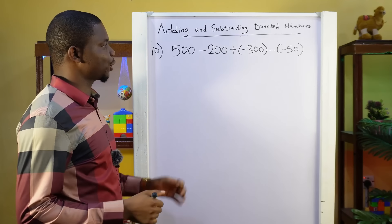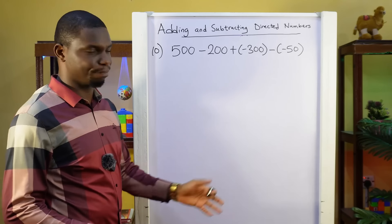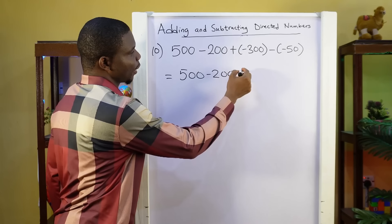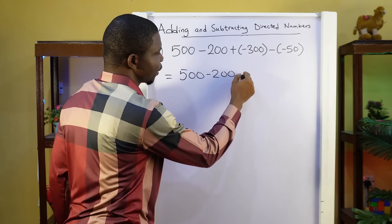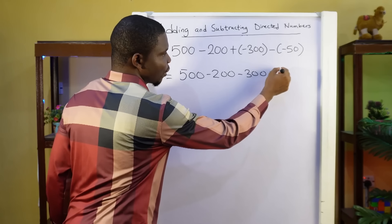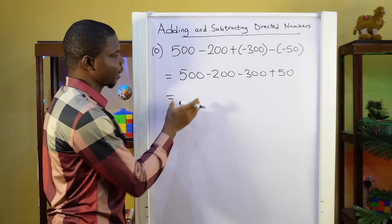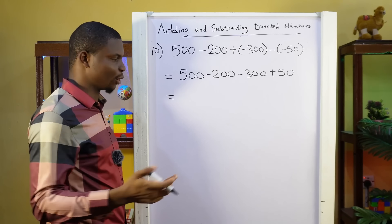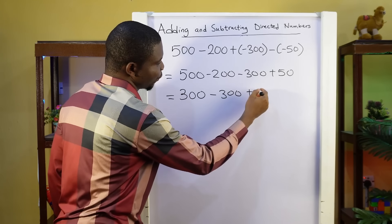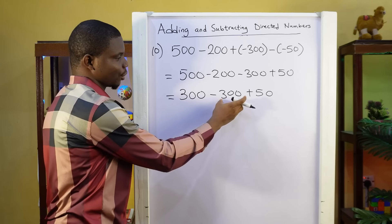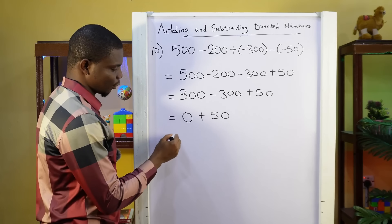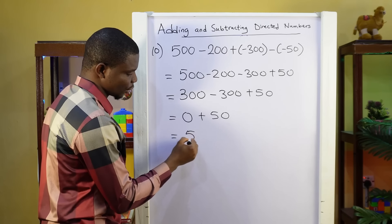Question 10: 500 minus 200 plus minus 300 minus minus 50. First we open the brackets: 500 minus 200. Plus doesn't change the sign inside the brackets, so we still have minus 300. But negative changes the sign inside the brackets, so this changes to plus 50. Taking them two at a time: 500 minus 200 is 300. Then 300 minus 300 is 0. So we have 0 plus 50. And of course, when you're adding 0 to anything, you still have that thing — so this is going to be 50.